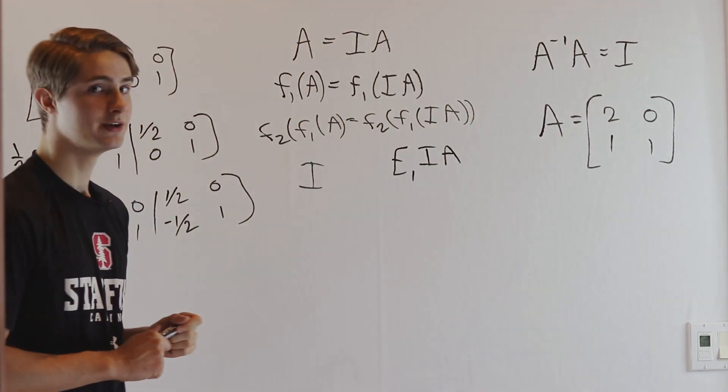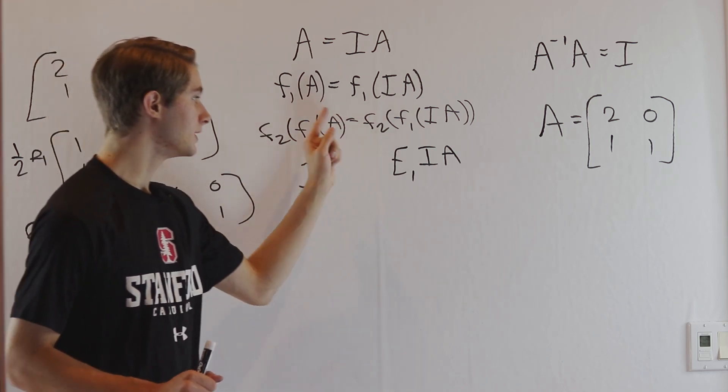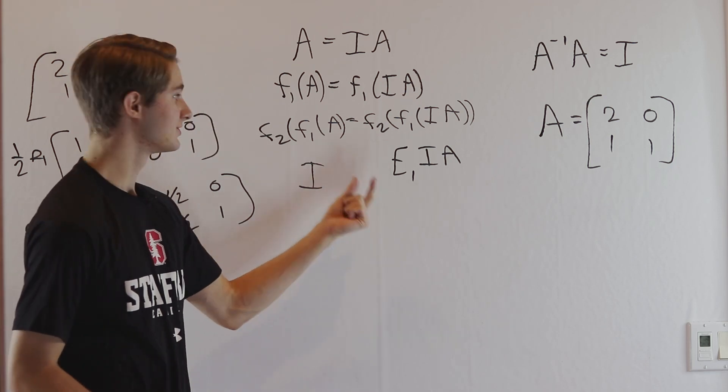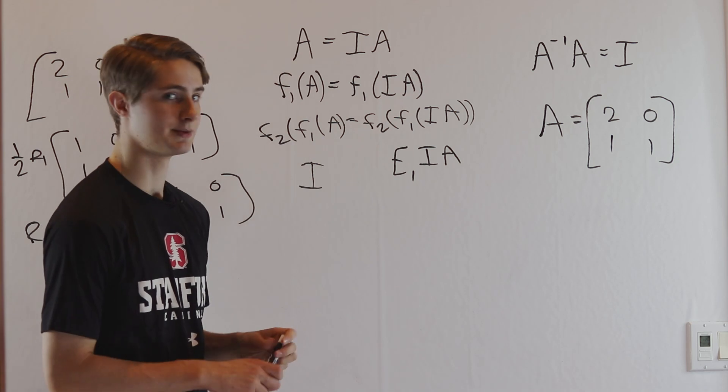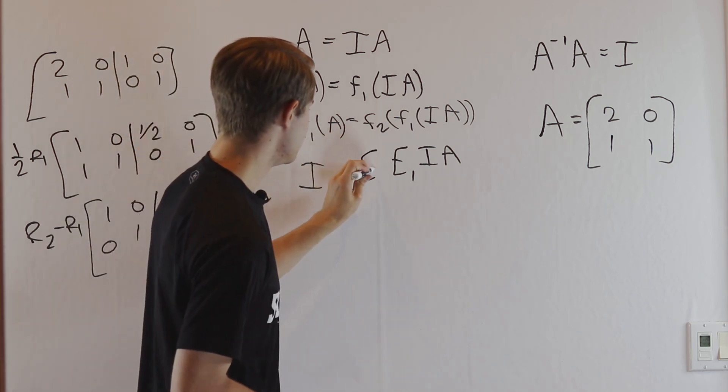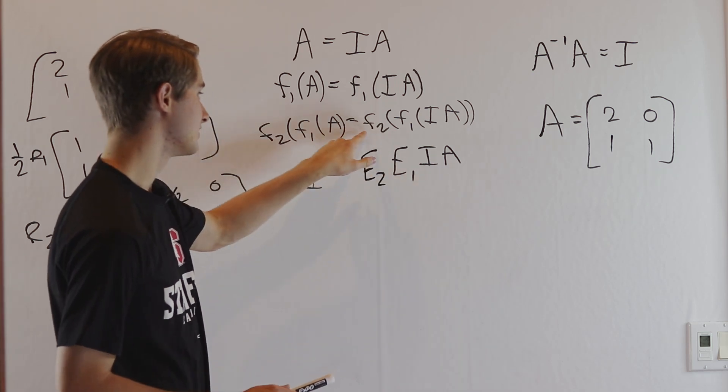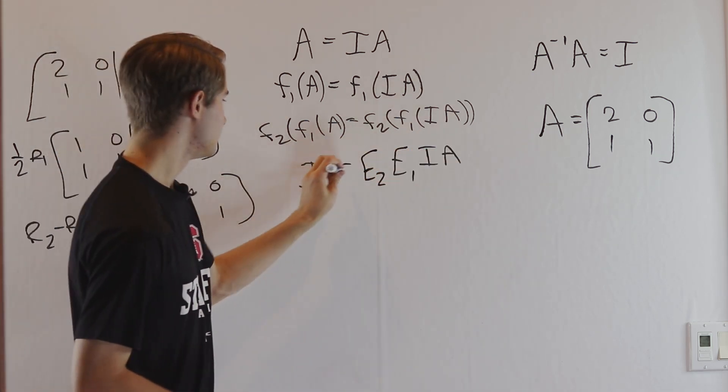We have f₂ here. Without even finding the elementary matrix, we know some elementary matrix exists that corresponds to this row operation. We can write it as E₂. If we do E₂ times this, it's the same as that row operation f₂ of our result. These two are equivalent.